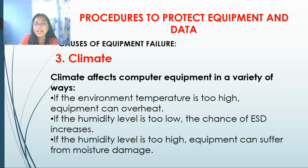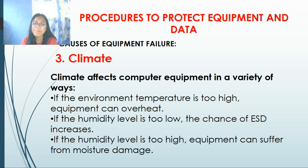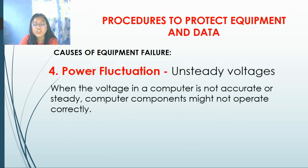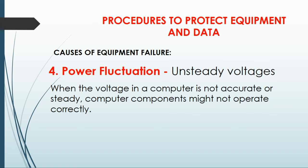We also have electromagnetic interference, or EMI — it is the intrusion of outside electromagnetic signals in a transmission media such as copper cabling. Next, we have climate, which can also affect computer equipment in a variety of ways. If the environment temperature is too high, equipment can overheat. If the humidity level is too low, the chance of ESD increases. If the humidity level is too high, equipment can suffer from moisture damage.